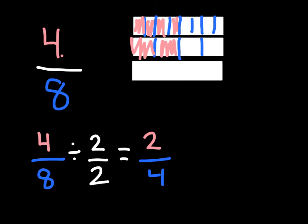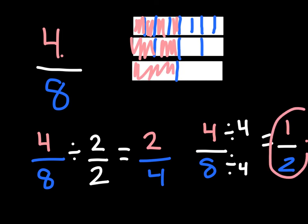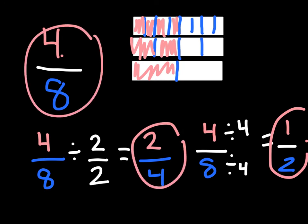Let's find another equivalent fraction for four eighths — a smaller one. A common factor between four and eight is four. Whatever I do to the numerator I do to the denominator: four divided by four is one, eight divided by four is two. On my fraction bar I shade in one half. We went smaller — one half is equivalent to two fourths, which is equivalent to four eighths.